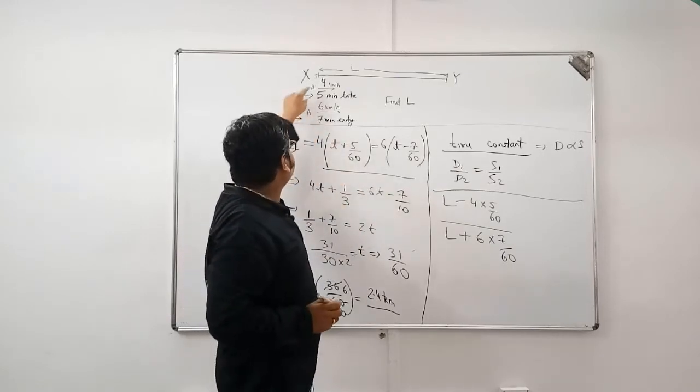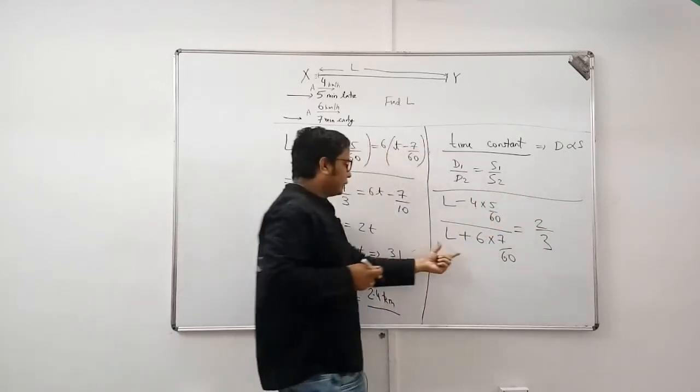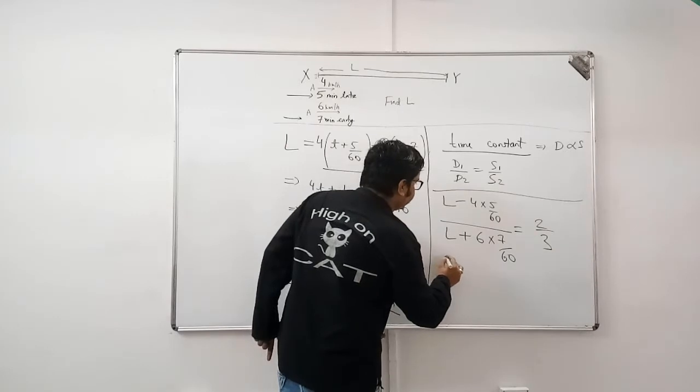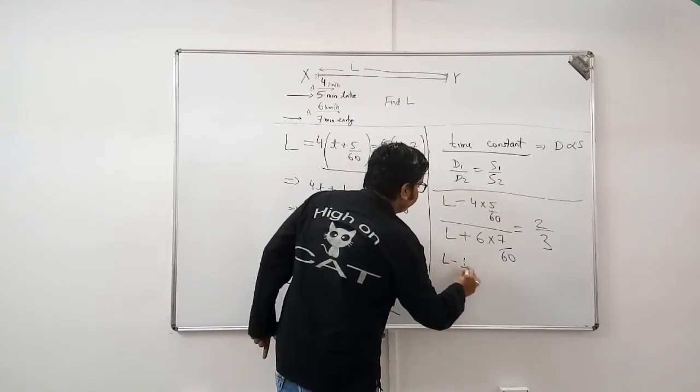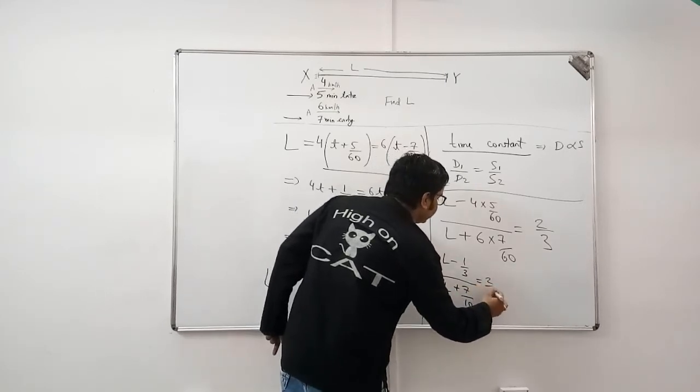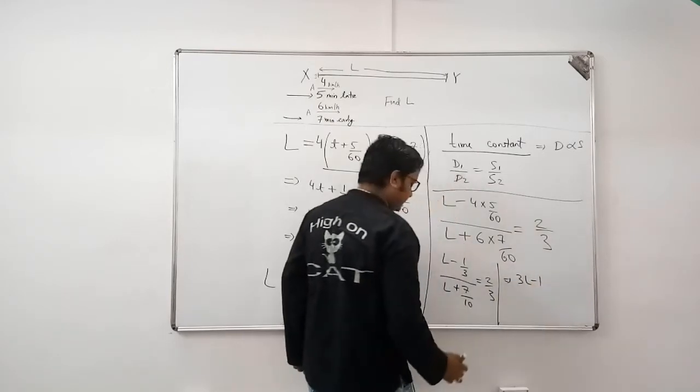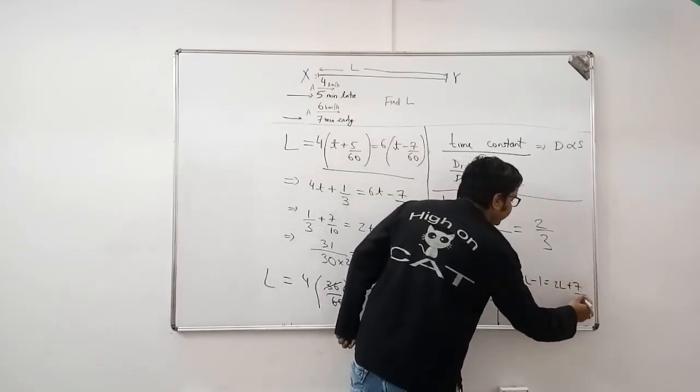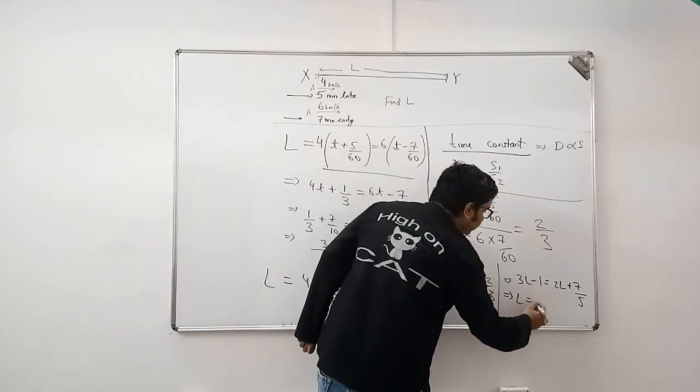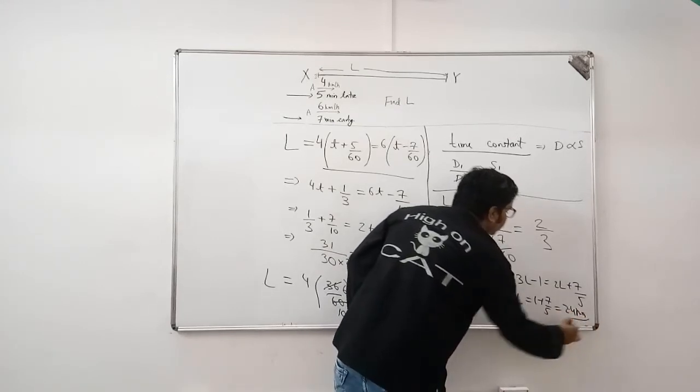At this length, the original time is equal to the ratio of speed, 4 by 6. So, this is equal to 2 by 3. Simple equation, the equation gets solved. What do we get here? L minus 1 by 3 divided by L plus 7 by 10 is equal to 2 by 3. Solving further, 3L minus 1 is equal to 2L plus 7 by 5. Or, L is equal to 1 plus 7 by 5, which is equal to 2.4 kilometers.